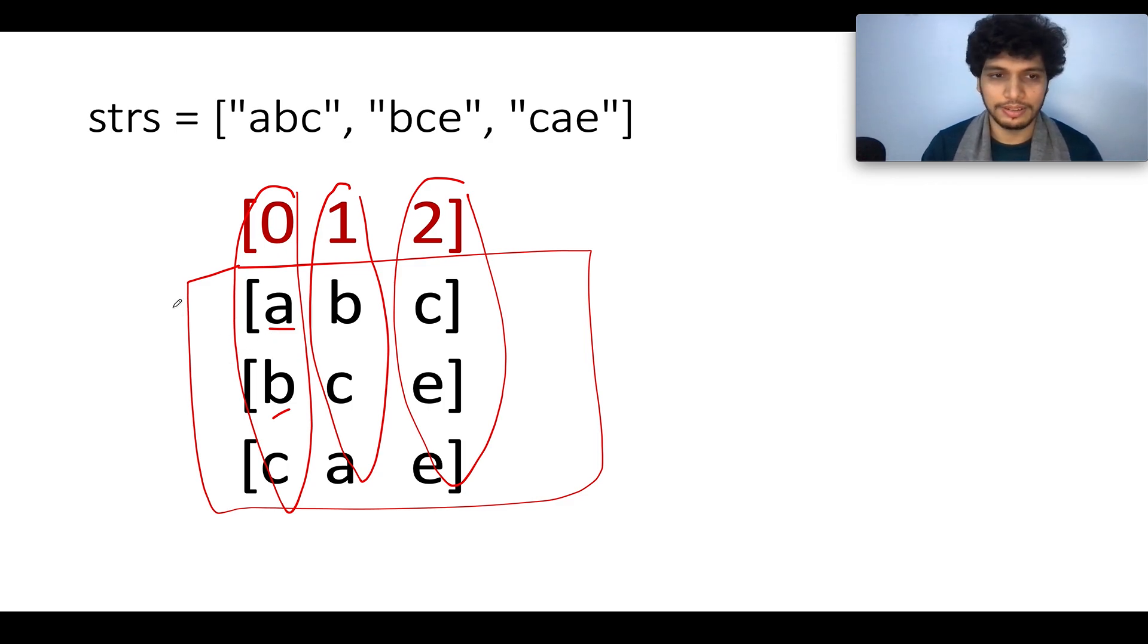So we will take two pointers. The first one would be i for the row count, the other one would be j for the column count. And for j equals to zero, we will be iterating over the three rows that we have. So in the first iteration, we will compare i with the previous row. So if i starts from one, the previous row will be the zeroth one, so i minus one would be zero. Let's compare these two, and since B is greater in value than A, that means it's a happy case.